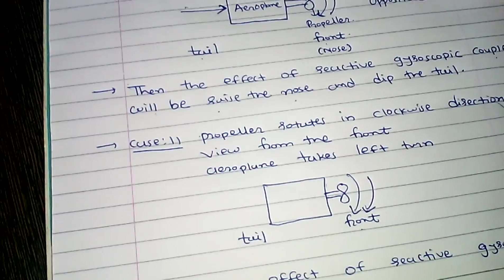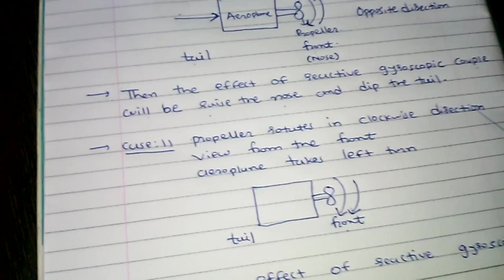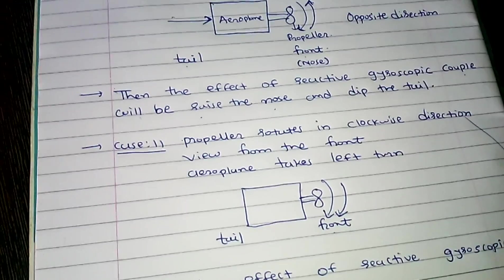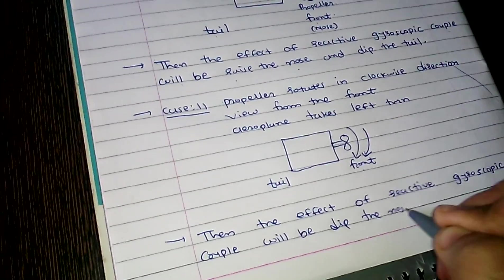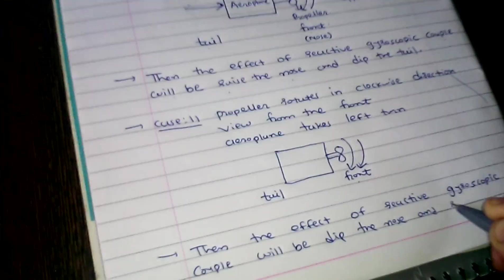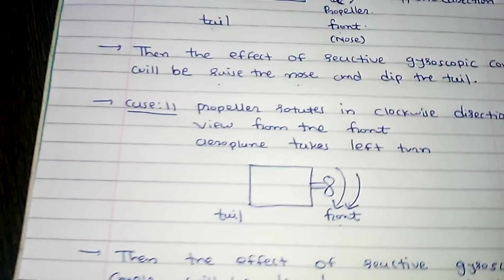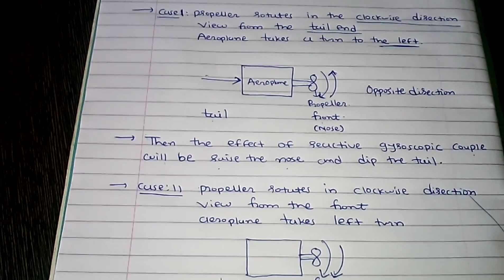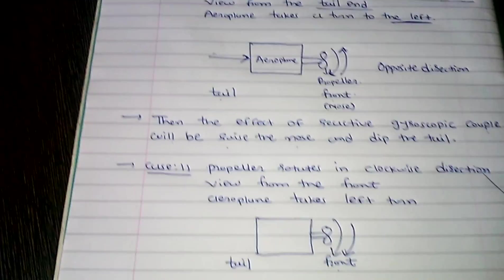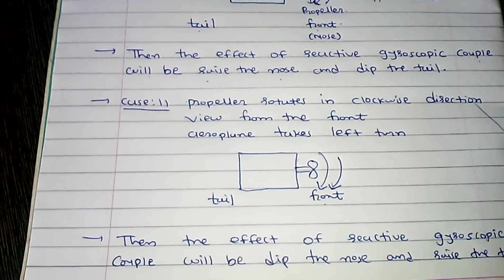In this case, you see that the direction of both arrows are the same. So the effect of reactive gyroscopic couple will be dip the nose and raise the tail. Remember only one sentence: if both directions are opposite, then raise the nose. If both directions are same, then dip the nose. Thank you.